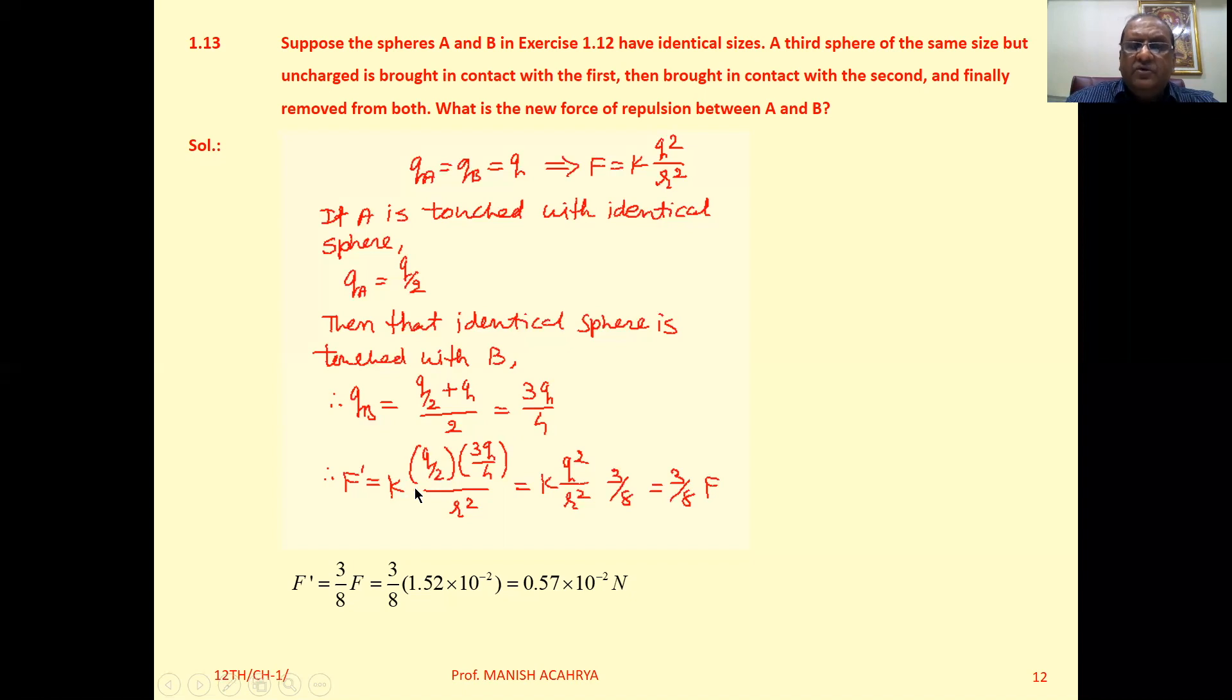...where QA is Q/2 and QB is 3Q/4, upon R² because the separation is the same. Resultantly we can write K × (Q/2) × (3Q/4) / R² = (3/8)F. In previous example 1.12 when we calculated...